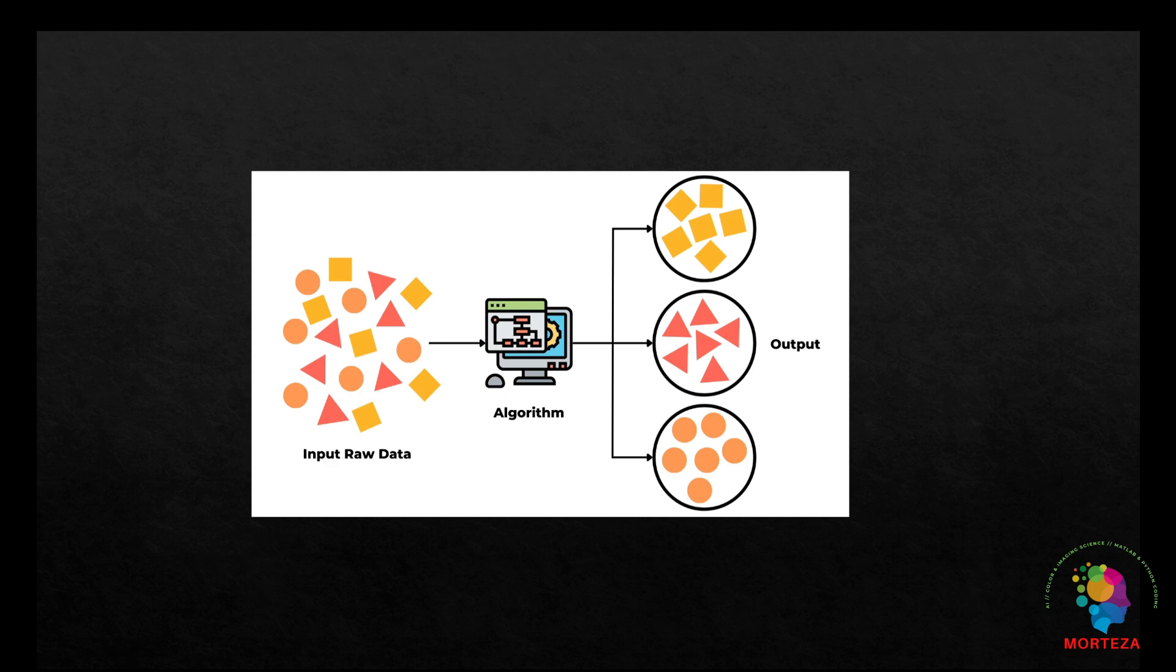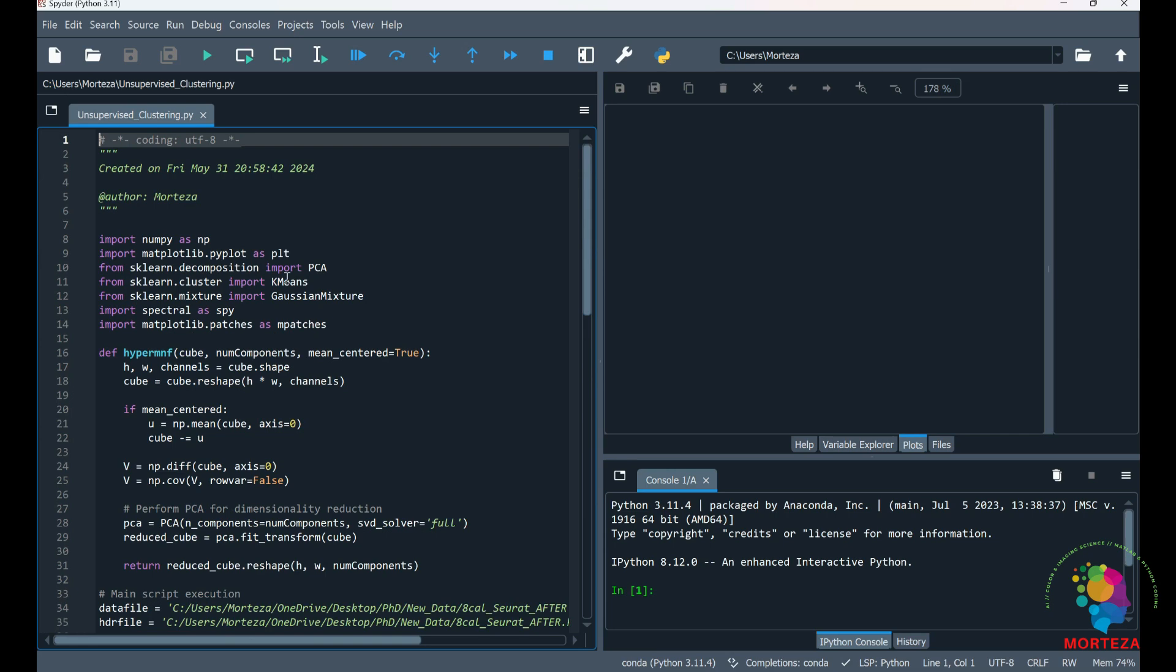Let's go to Python to show you an example of unsupervised learning in hyperspectral image clustering. In this example, I'm going to be comparing k-means with Gaussian mixture model. Here's the script for today's code. As you can see, first we import the libraries that we need.